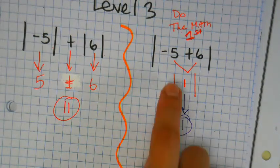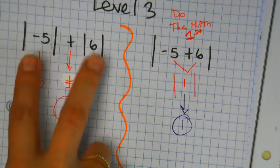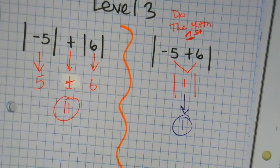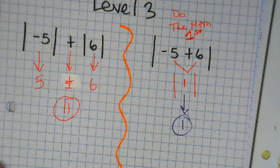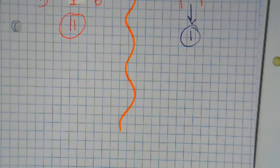One. You get completely different answers, and you should get completely different answers. Because of the placement of the bars, you will end up with different answers because the math is completely different. Here, you do this math first. Here, you drop them down first. Completely different strategies.